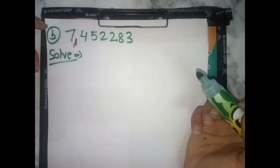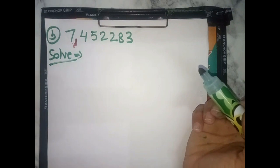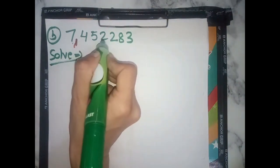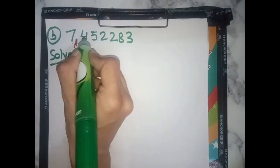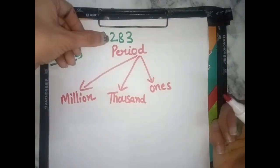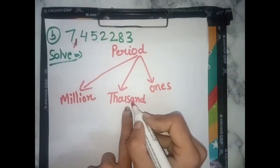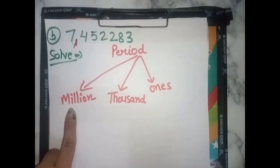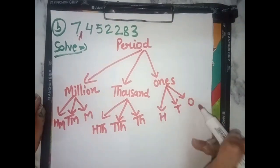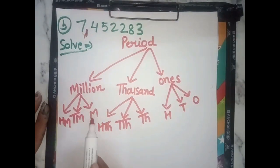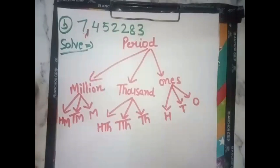Next number: 7,452,283. This is the same — International system. First we set up the periods: ones period, thousands period, millions period. Place values are: ones, tens, hundreds — thousands, ten thousands, hundred thousands — million, ten million, hundred million.